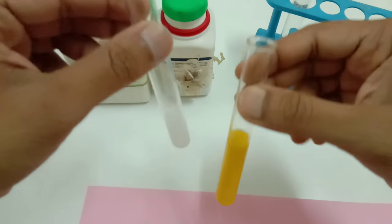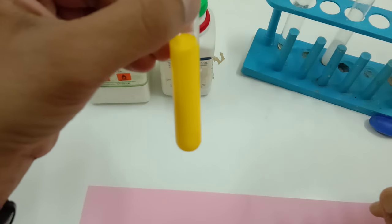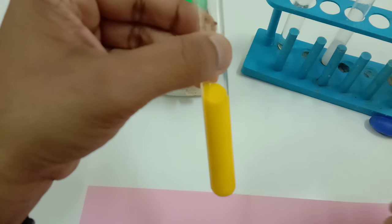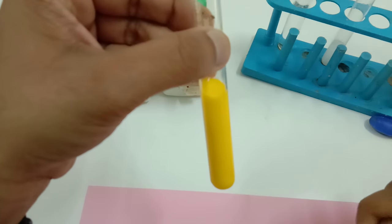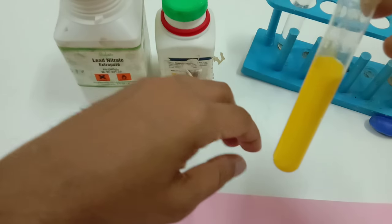There you go people, fantastic. So here as you can see that the precipitates have formed and the precipitates are yellow in color. Now let us find out from the reaction which is this yellow precipitate over here.